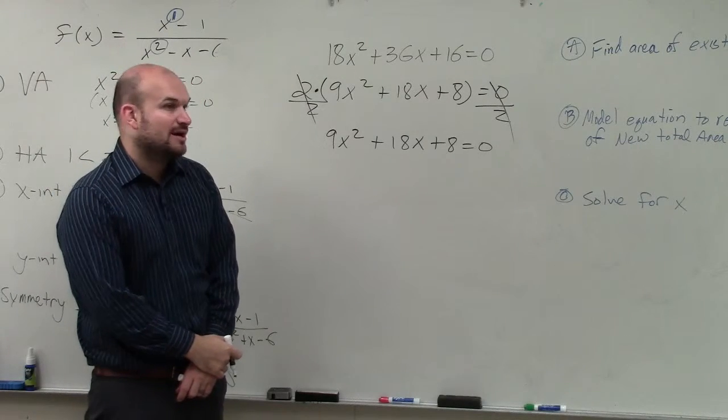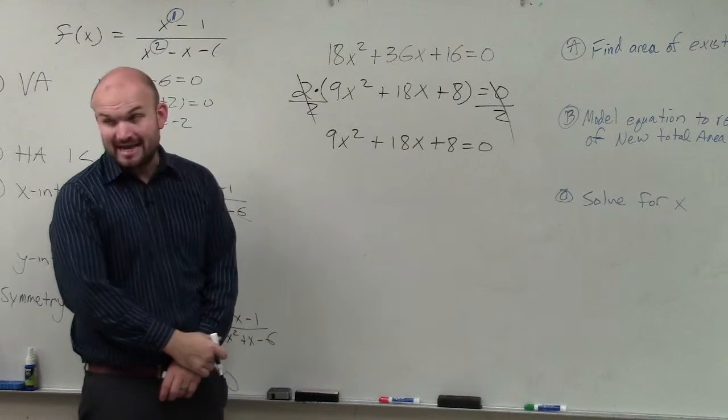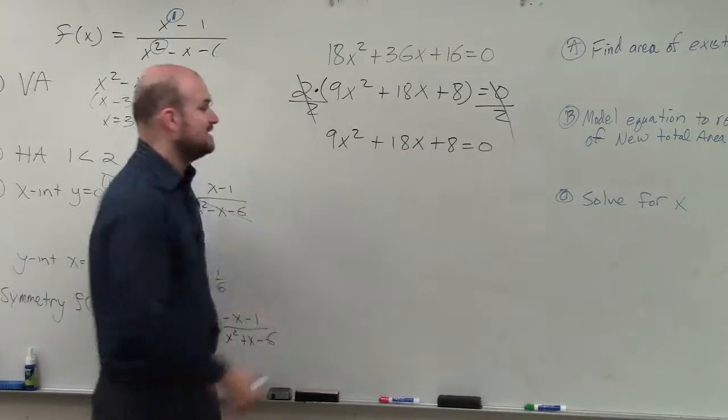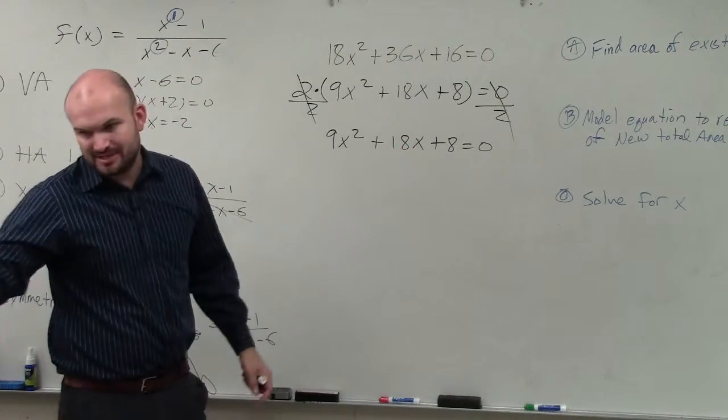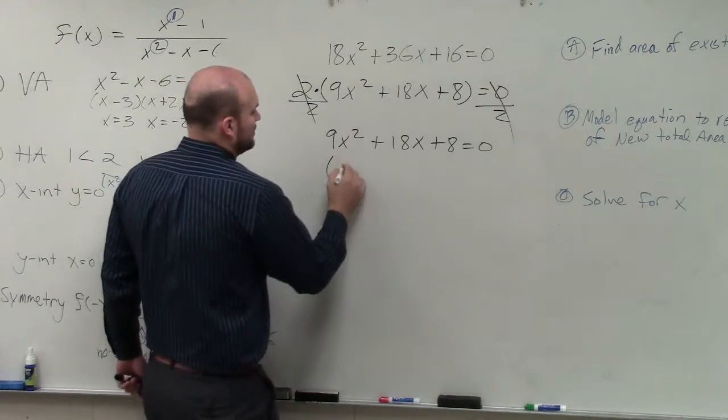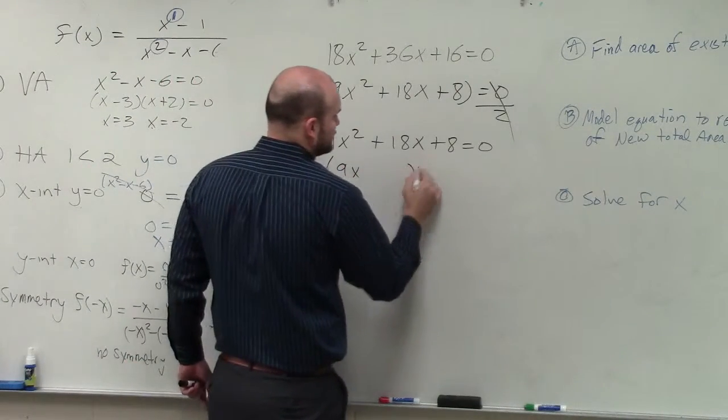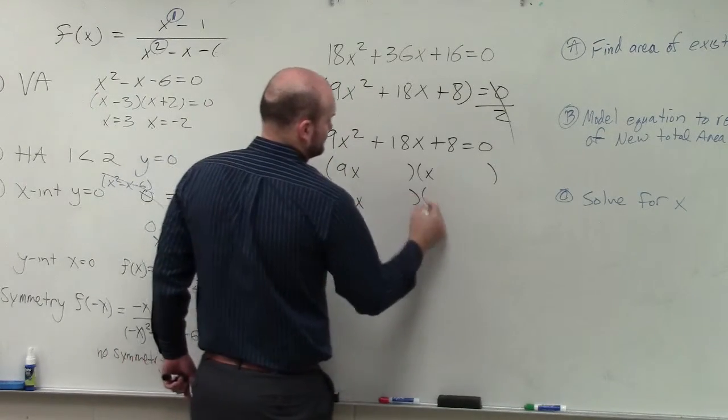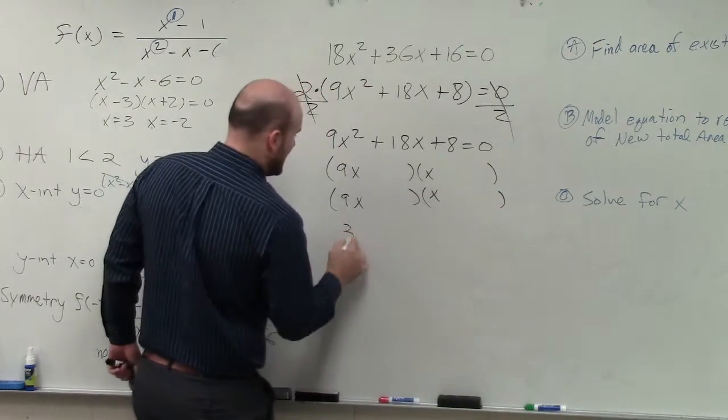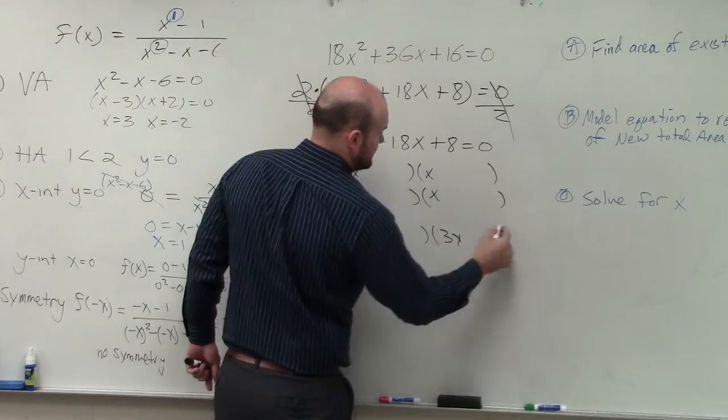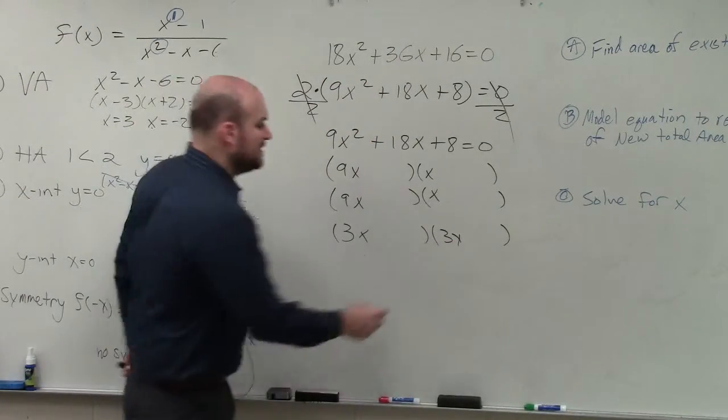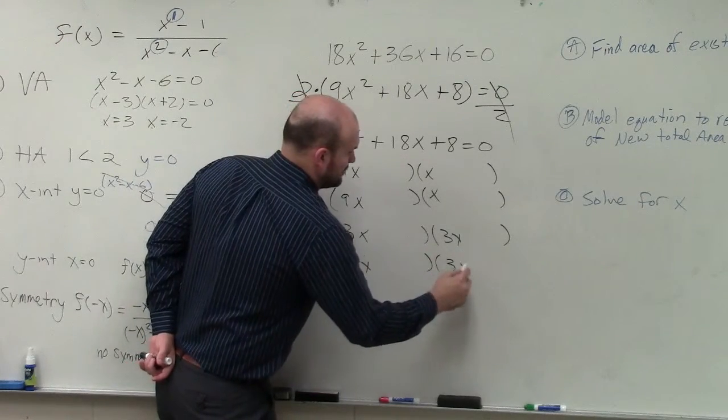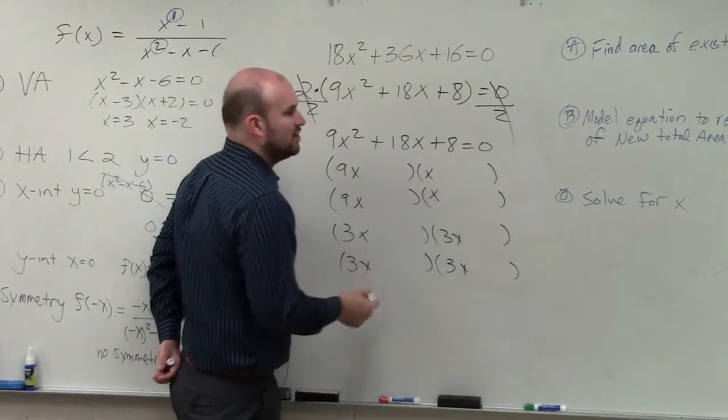OK, so now I basically want to determine what two numbers multiply to give me 9x and multiply to give me 8, where the middle terms are going to add to give me 18x. I'm going to do these in my head, because you guys can do the longer method if you like. But I know it's either 9x times x, or I have 3x. So I've got to think of what are all the possibilities that I can multiply to give me 8.